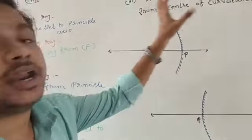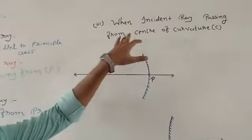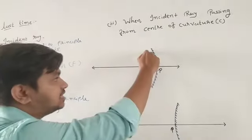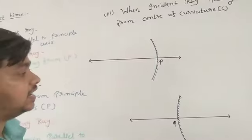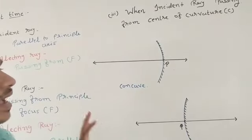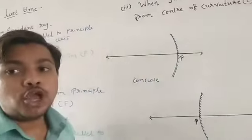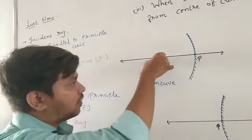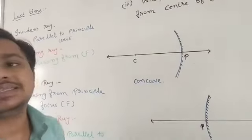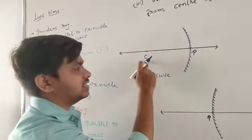Today we are going to see the other two specific incident rays. First, when the incident ray passes from the center of curvature. Let's draw a concave mirror — its reflecting surface is inwardly curved. The pole is at the center of the mirror. When drawing this mirror, you use a rounder and put its point at the center of curvature, which is at 6 centimeters as discussed in previous videos.